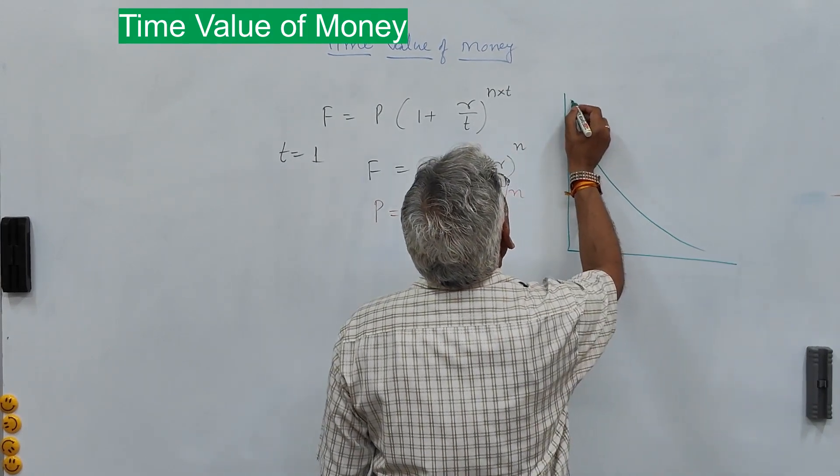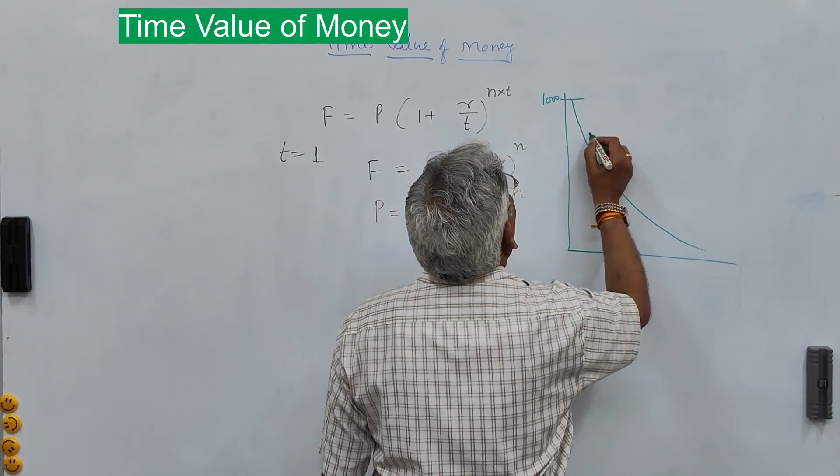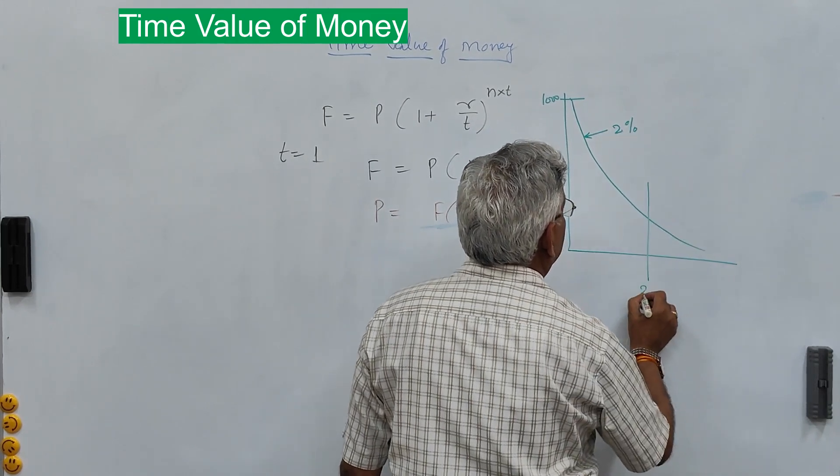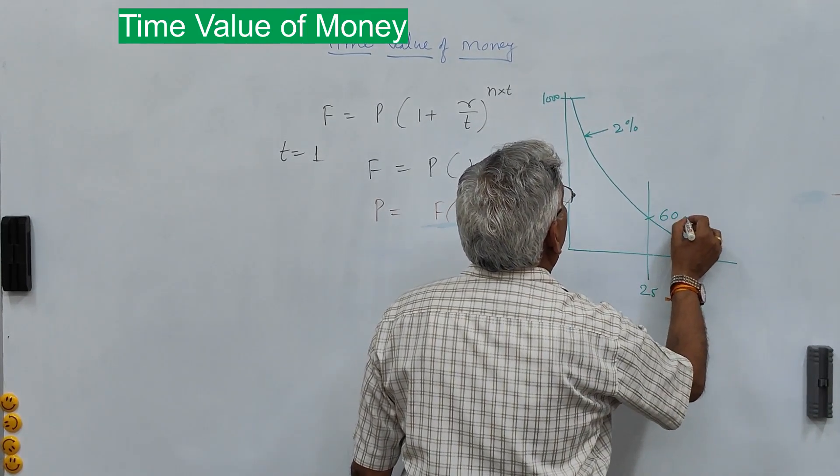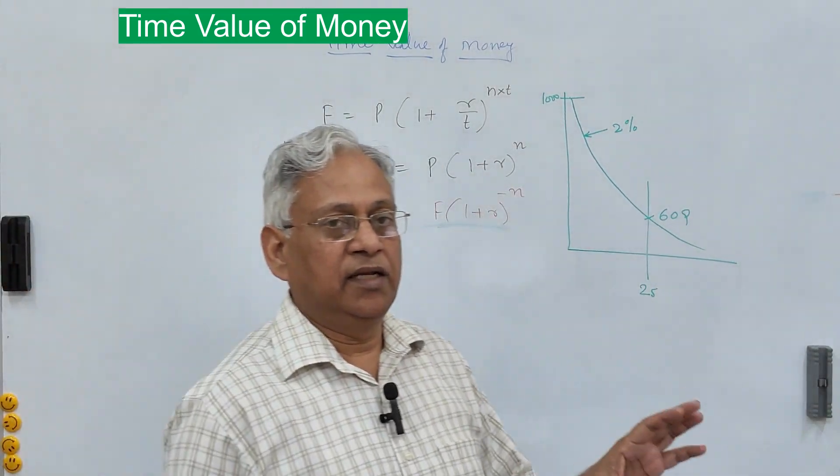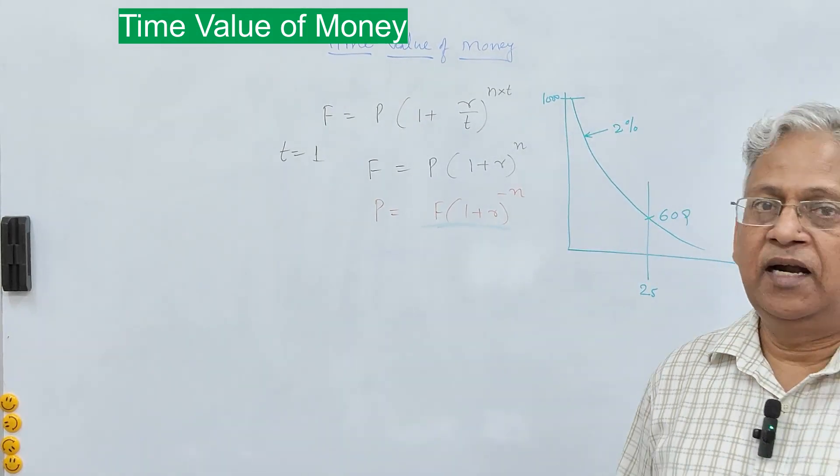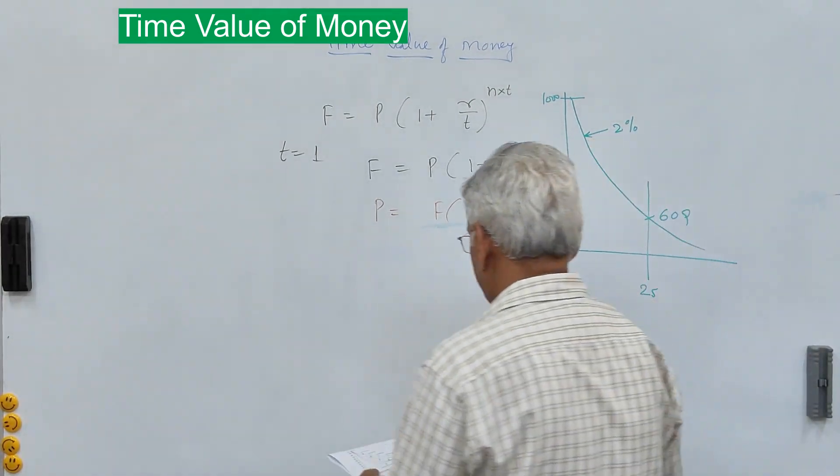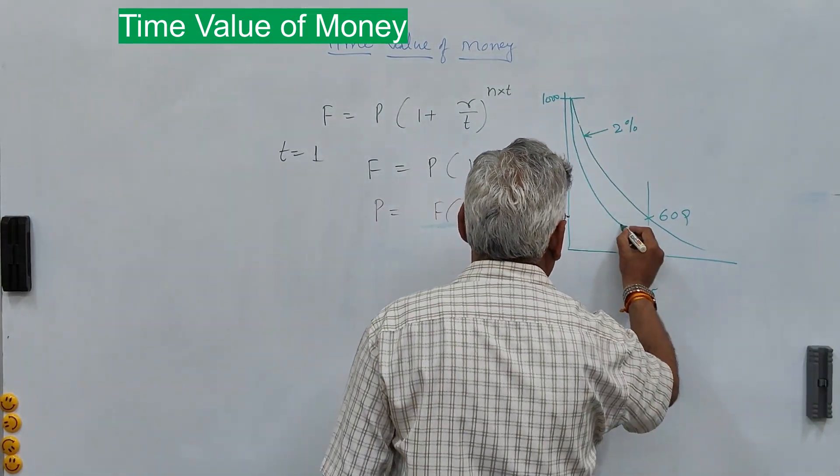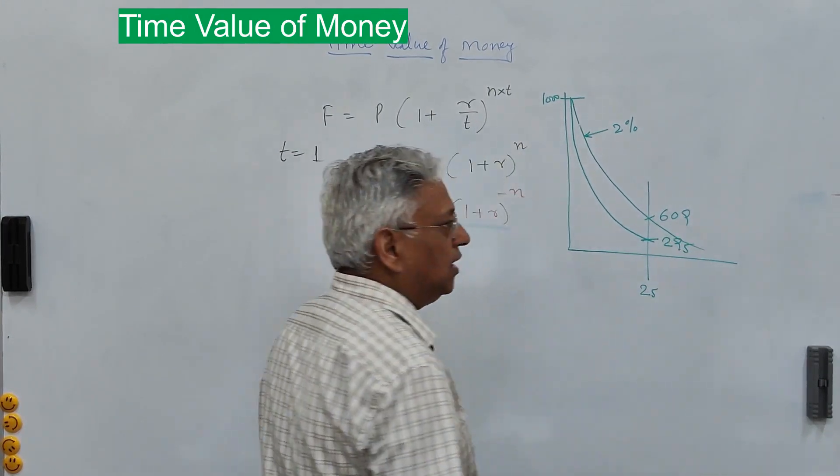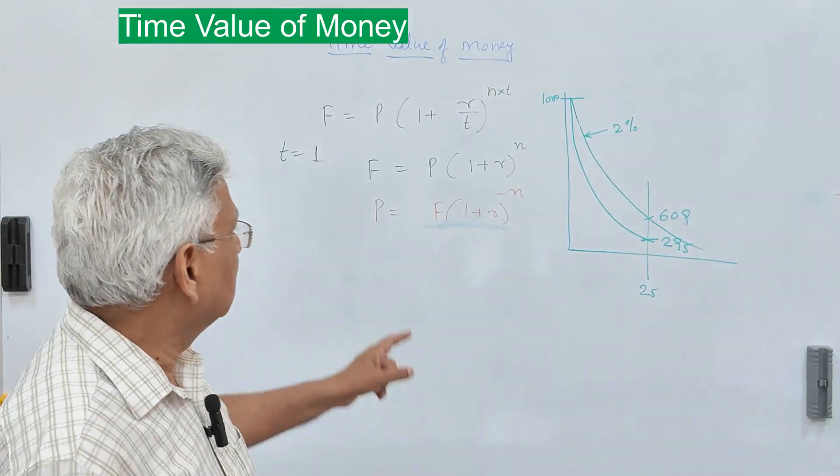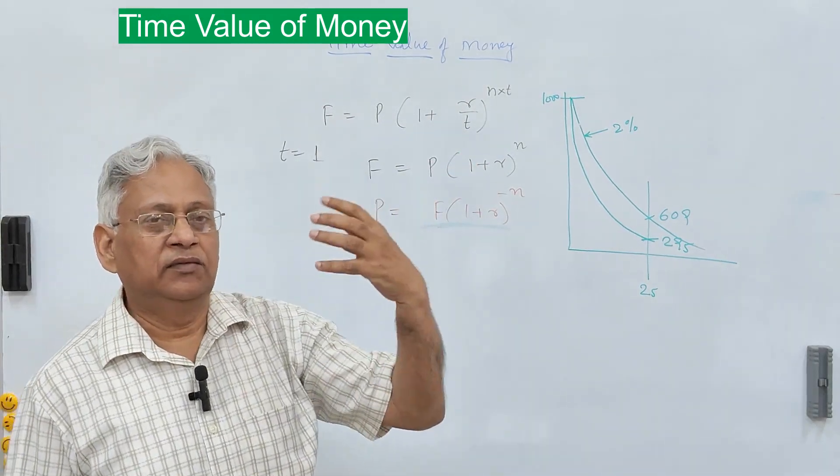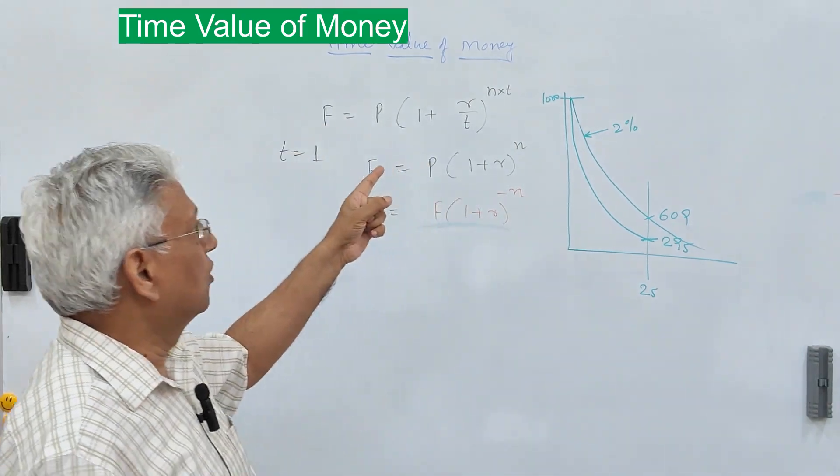This is 1000 rupees here, and let's say interest rate is 2 percent. At the end of 25 years, it will be around 609 rupees. So 1000 rupees today, if not invested at a discount rate of 2 percent, it will be 609. If this discount rate is 5 percent, its value will be around 295. That is the time value of money, and in this equation, T also has remarkable effect on the future value or the money which you get after N number of years.